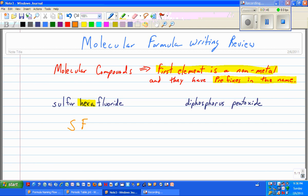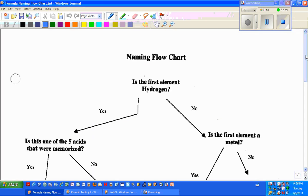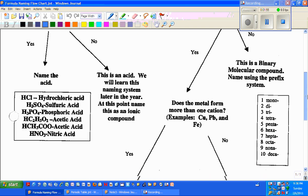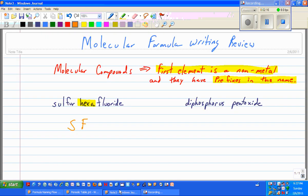Hexa, we need to know what hexa means. It's one of those prefixes. Those are located on our formula writing flowchart. They are right here. And hexa is right down here, meaning 6. So what we're going to do is put a subscript 6.